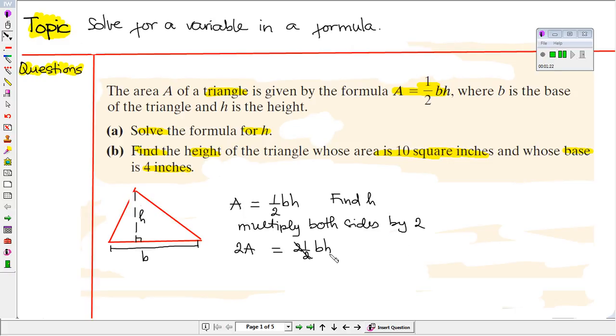Next, we want to divide both sides by b. Then we have 2A divided by b. That will be the height. Now we're done with part a. So we found the height.